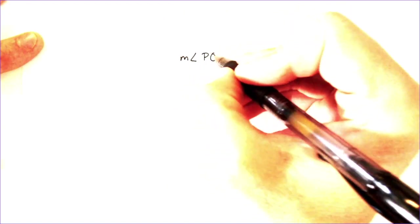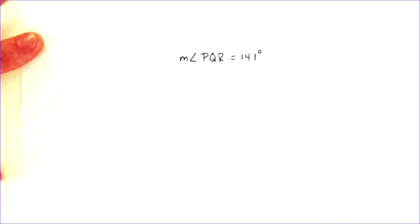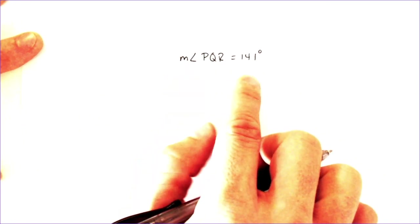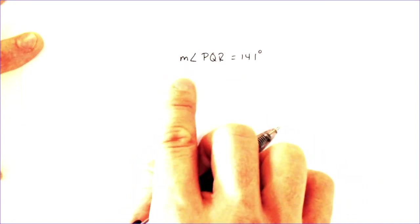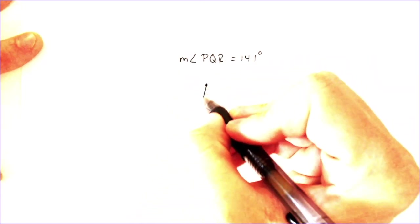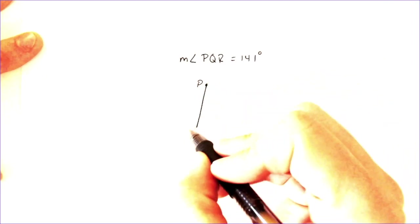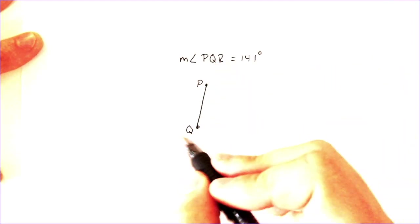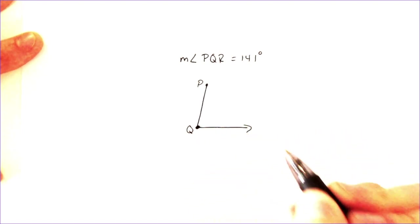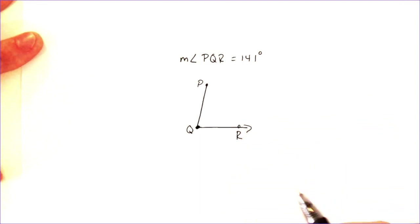So, for our next problem, we're going to have the measure of angle PQR is equal to 141 degrees. And that M just means that the angle measurement is going to be given, and that was 141. So, don't freak out about that. Angle symbol PQR. So, I'm going to draw that angle. I'm going to draw angle P. Then Q, Q is the middle point. It is going to be the middle part, the vertex of the angle, and R.